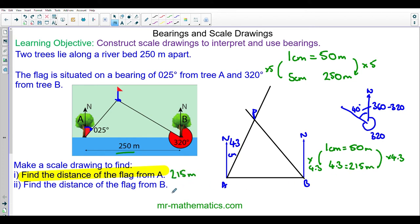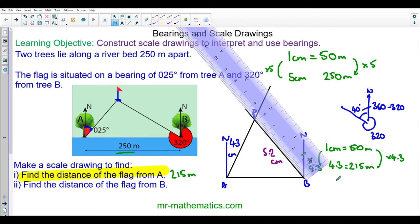The distance of the flag from point B - we can see this is 5.2 centimeters. Again using our scale of 1 centimeter equals 50 meters, we have 5.2 centimeters. So in real life it will be 50 multiplied by 5.2, and this is 260 meters.